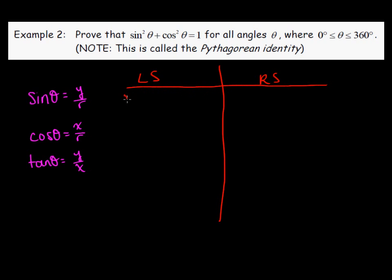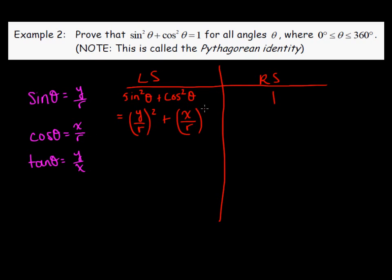We start by rewriting the left side and the right side. There's not really anything we can do with the right-hand side here, but we can rewrite the left-hand side using the ratios. Sine theta is y over r, and that's squared. Cosine theta is x over r, and that's also squared. So we get y squared over r squared plus x squared over r squared, which already has a common denominator, giving us y squared plus x squared over r squared.